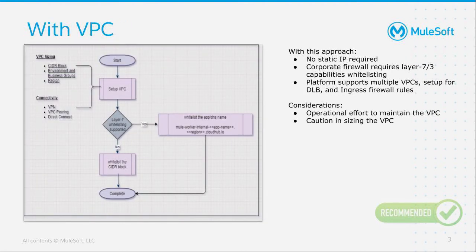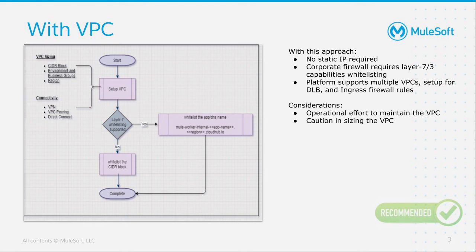Another common approach to firewall configuration involves Layer 7, which is also known as the application layer. Layer 7 lets you sort traffic according to which application or application service the traffic is trying to reach and what the specific contents of the traffic are. Rather than simply blocking all traffic on a certain port, you could use an application firewall to accept traffic on that port in general but block any traffic that contains a known vulnerability, such as a SQL injection or a malicious telnet command.